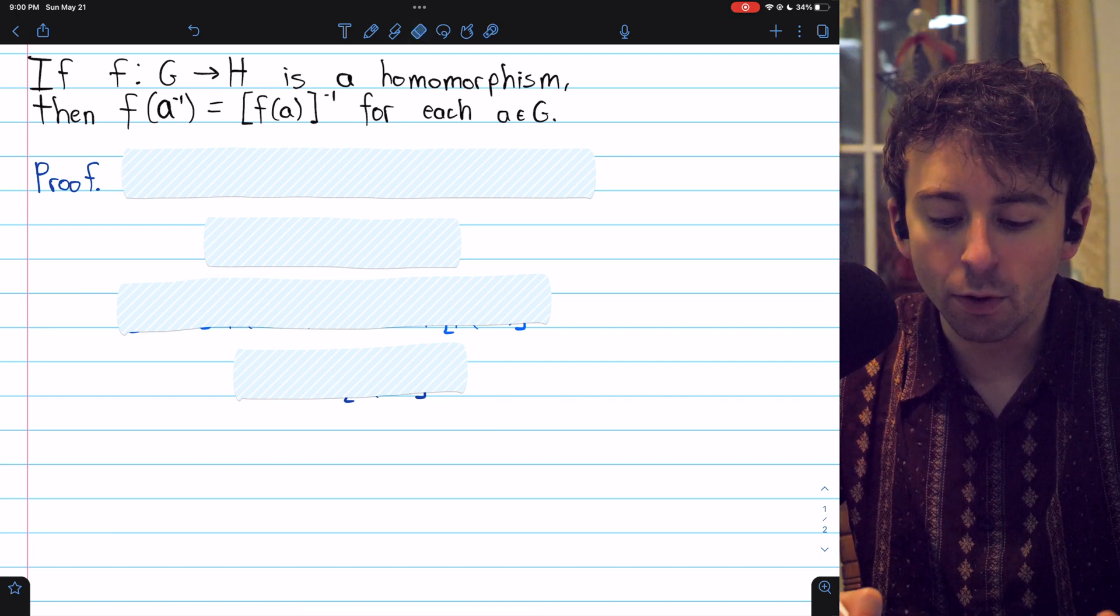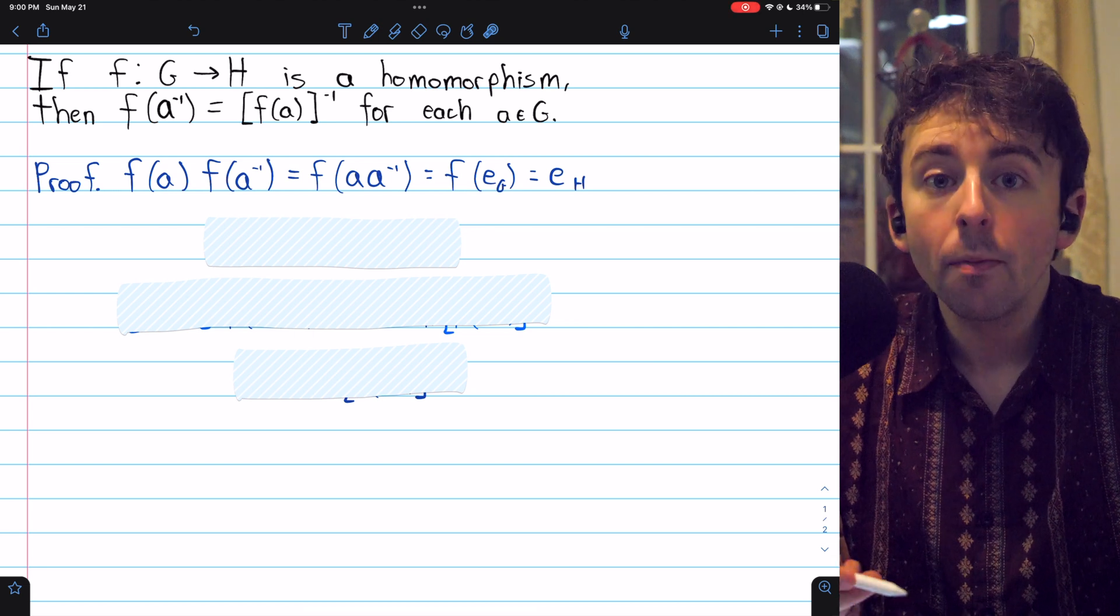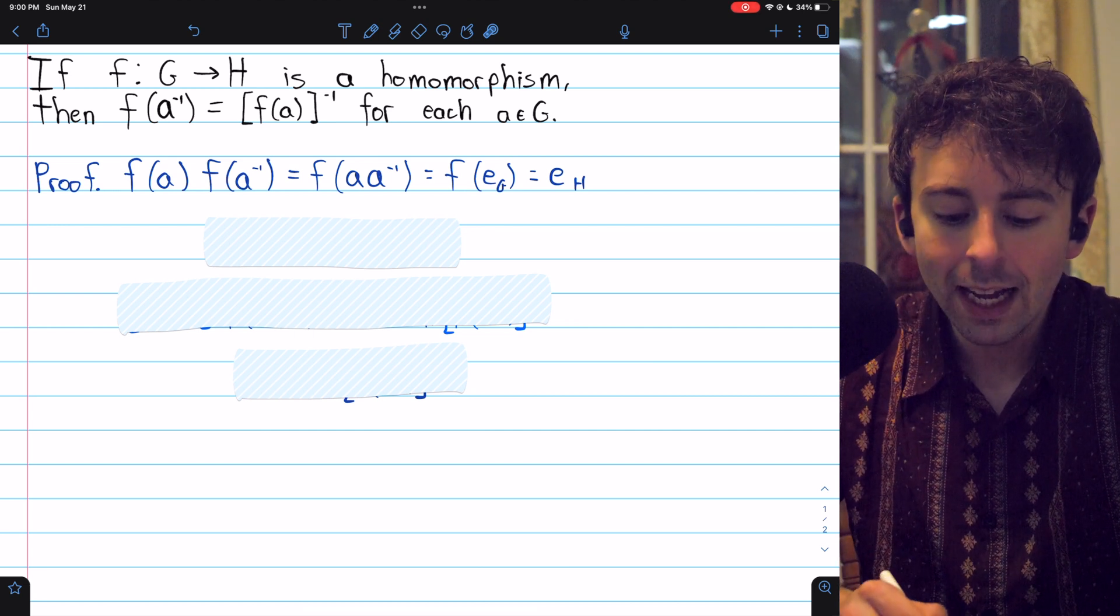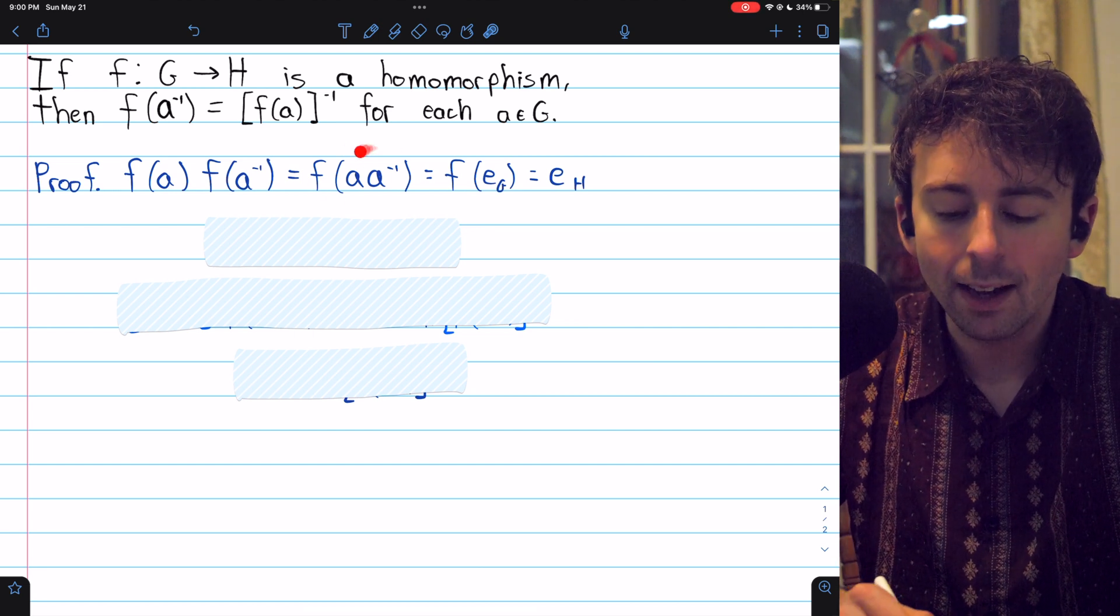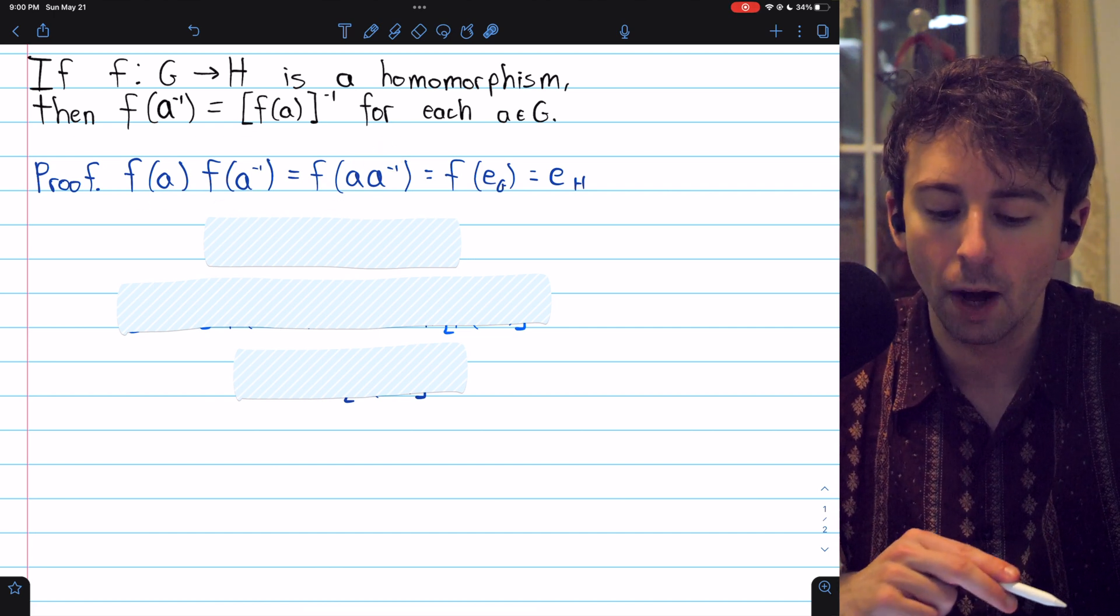Let's begin the proof by considering f(a) times f(a inverse). By definition of a homomorphism, this is equal to f(a·a inverse), since this is the key property of a homomorphism, is that it preserves the group operation.